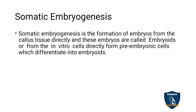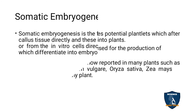The explant is the main source. Somatic embryogenesis: the formation of embryos from the callus tissue directly — these embryos are called embryoids — or these embryos are formed in vitro directly from pre-embryonic cells which differentiated into embryoids. So somatic embryogenesis means the formation of embryos from the callus, called embryoids, or from pre-embryonic cells done in vitro inside the laboratory.